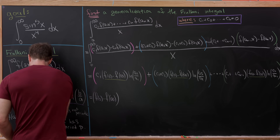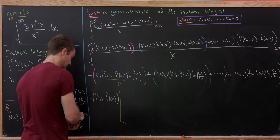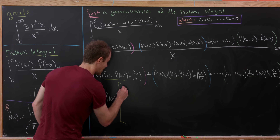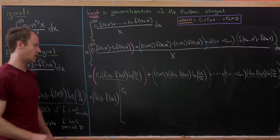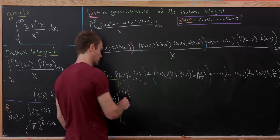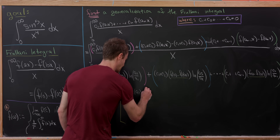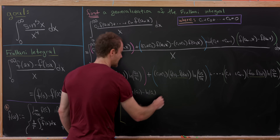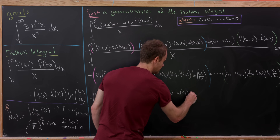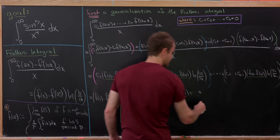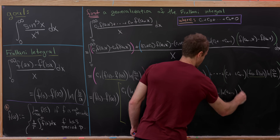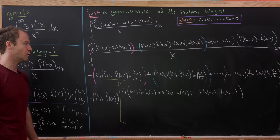After factoring out f(0) − f(∞), what is attached to c₁? It's all of the logarithm terms: ln(a₂/a₁) expanded as ln(a₂) − ln(a₁), then plus ln(a₃) − ln(a₂), all the way to ln(aₙ) − ln(a_{n−1}). That full sum is attached to c₁.